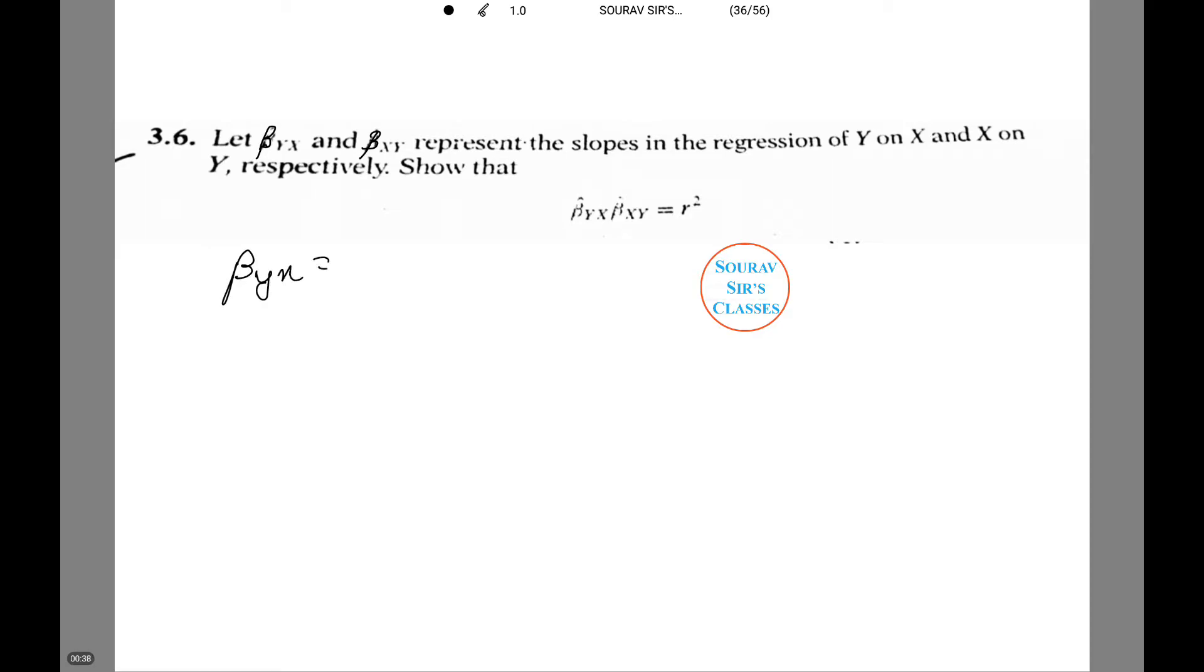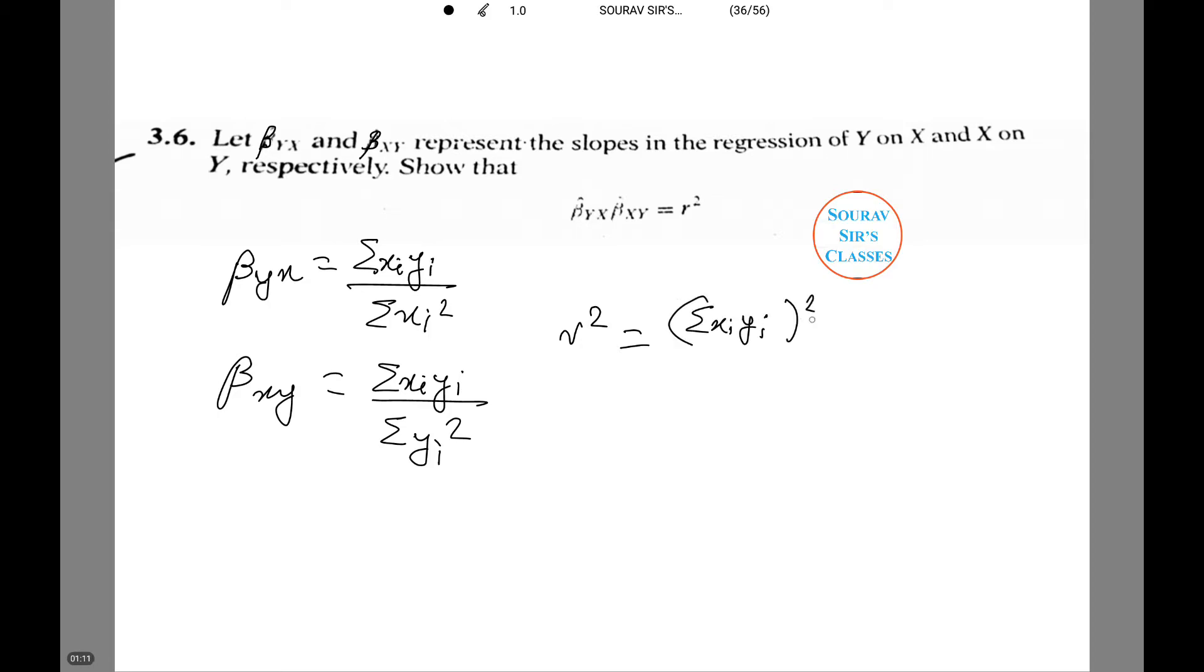Beta y x equals to summation x i y i by summation x i square. Multiplying these two we obtain the expression for r square that is r square equals to summation x i y i whole square by summation x i square summation y i square.